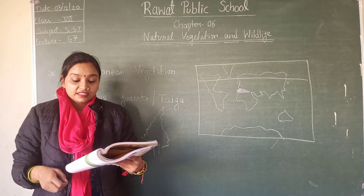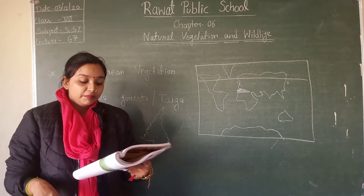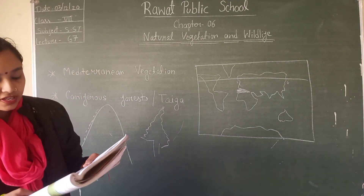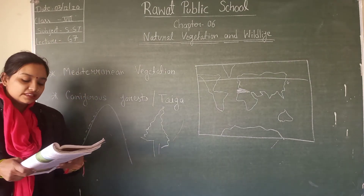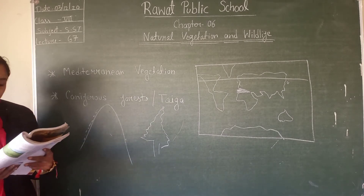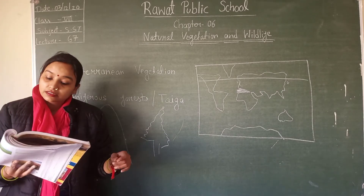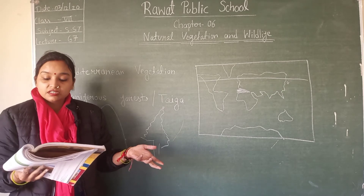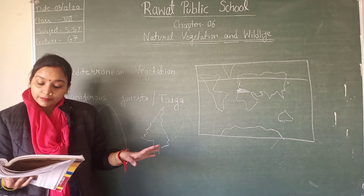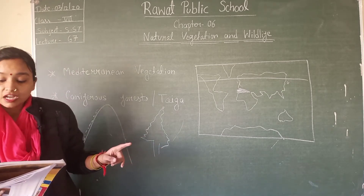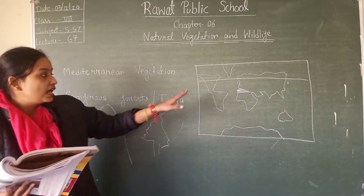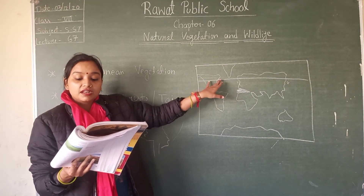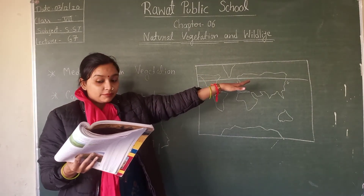These characteristics have made lumbering easy and economical in coniferous forest regions. The trees include pine, firs, spruce, cedar, and large hemlock. These forests are found in Alaska, southern Canada, Norway, Sweden, Finland, and Russia.